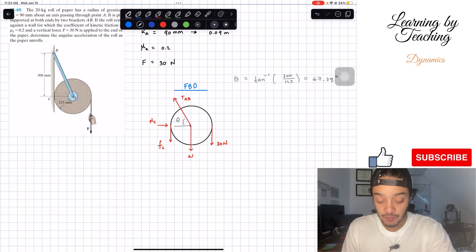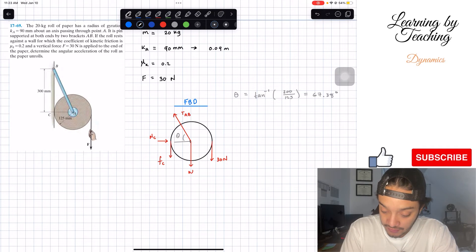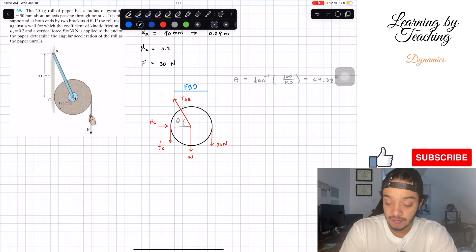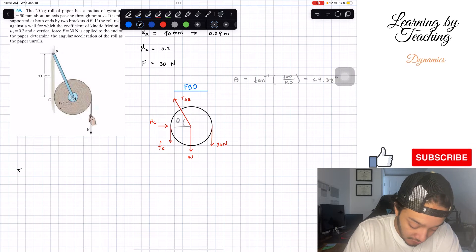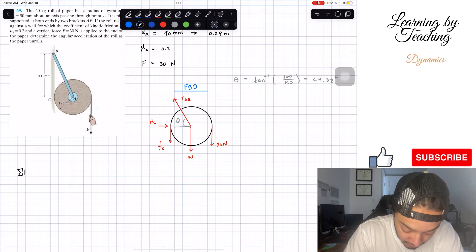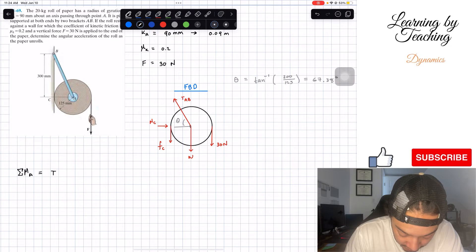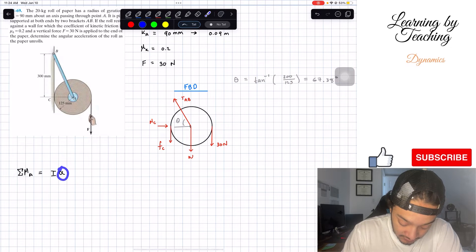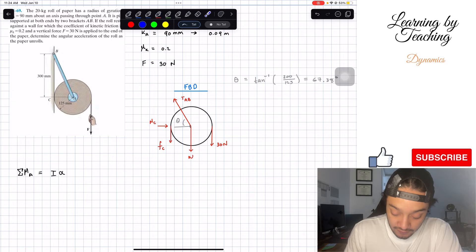So since we have our directions, we have everything. If we want to find the angular acceleration, the first formula that comes into mind is the summation of moments around my center of gravity for my object. So if we do a summation of moments around A, this should be equal to my moment of inertia multiplied by my angular acceleration, and this is the guy that we want to solve for.